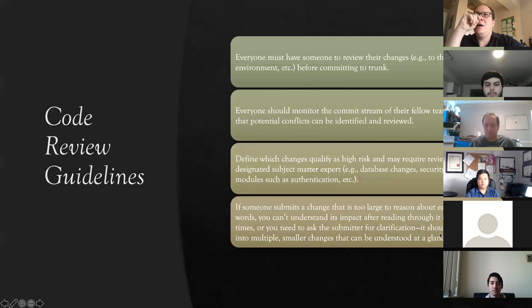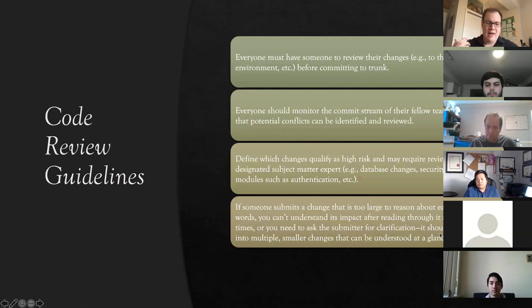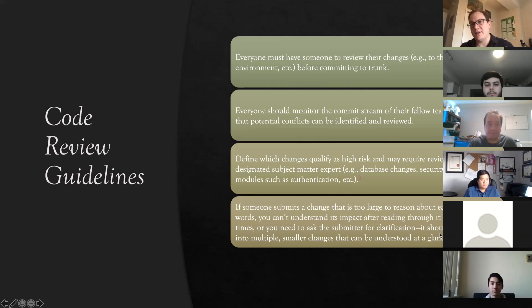Here are some code review guidelines. Everyone must review their changes before committing them to trunk, and everyone must have someone else review the changes before committing — that should be developers, operations, and security. Anyone making changes to the code should have at least one other person review their pull request before it goes through. My preferred way of doing this is to do a Zoom call or sit next to them, pull up their code, and explain their code back to them.